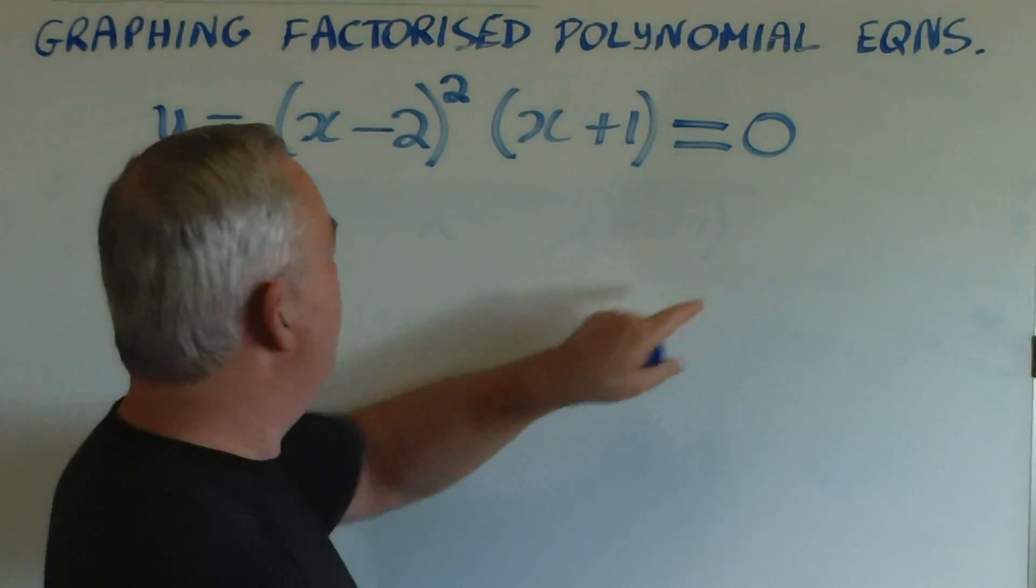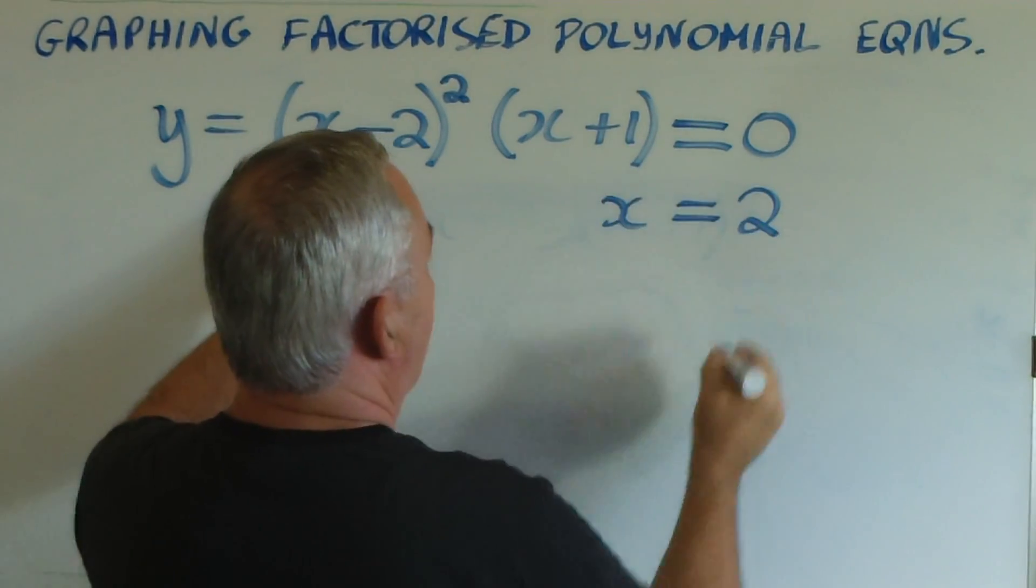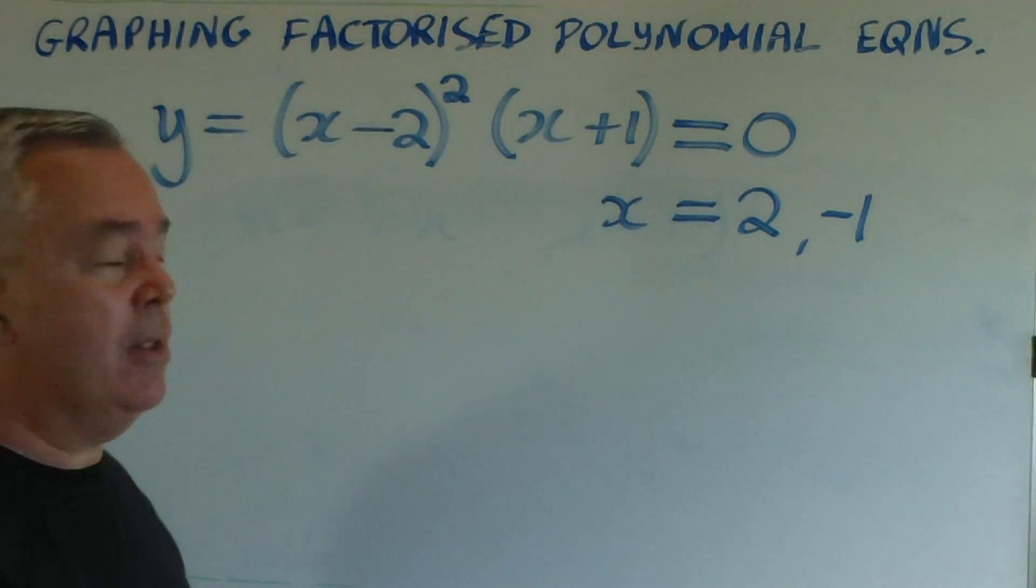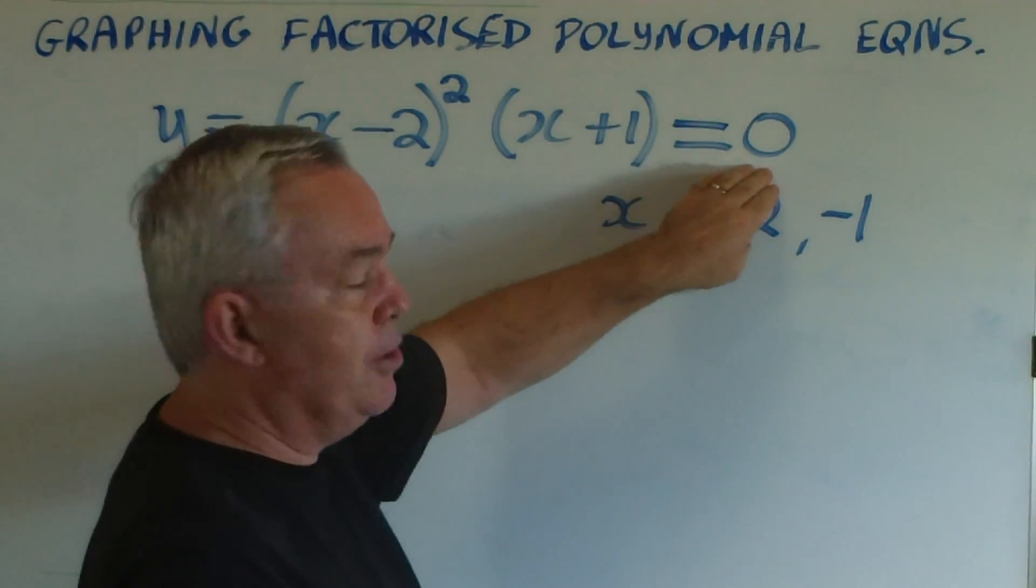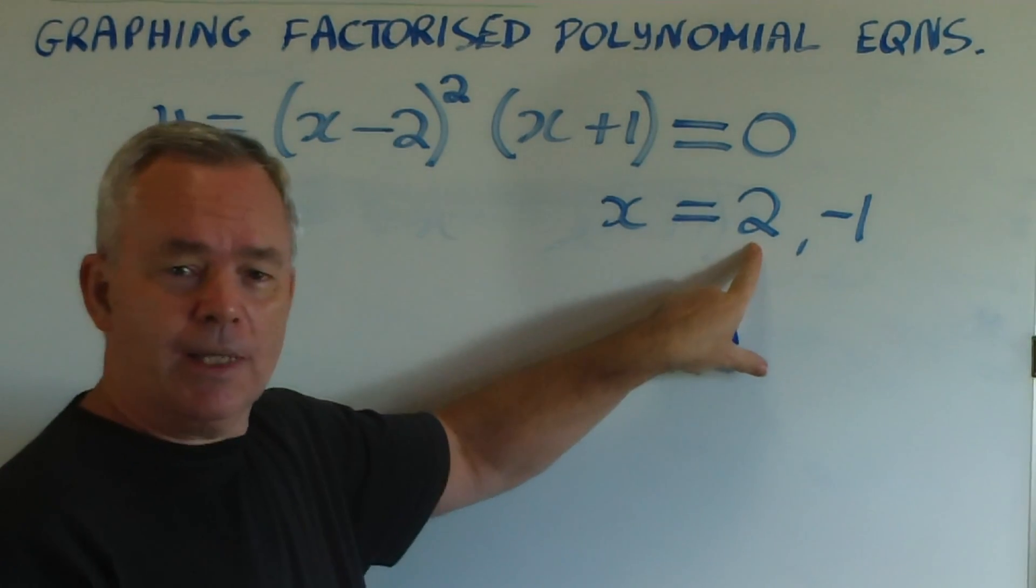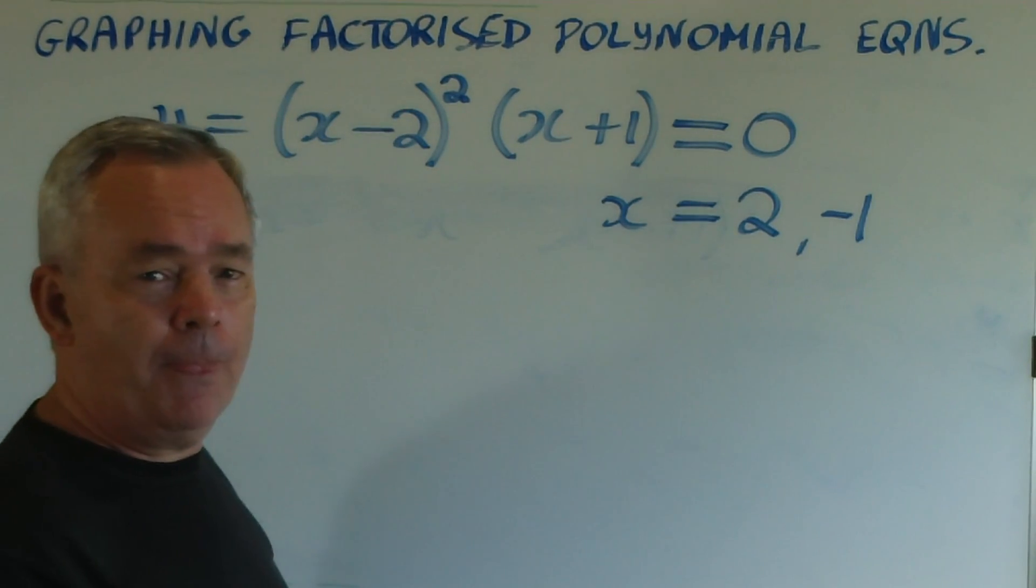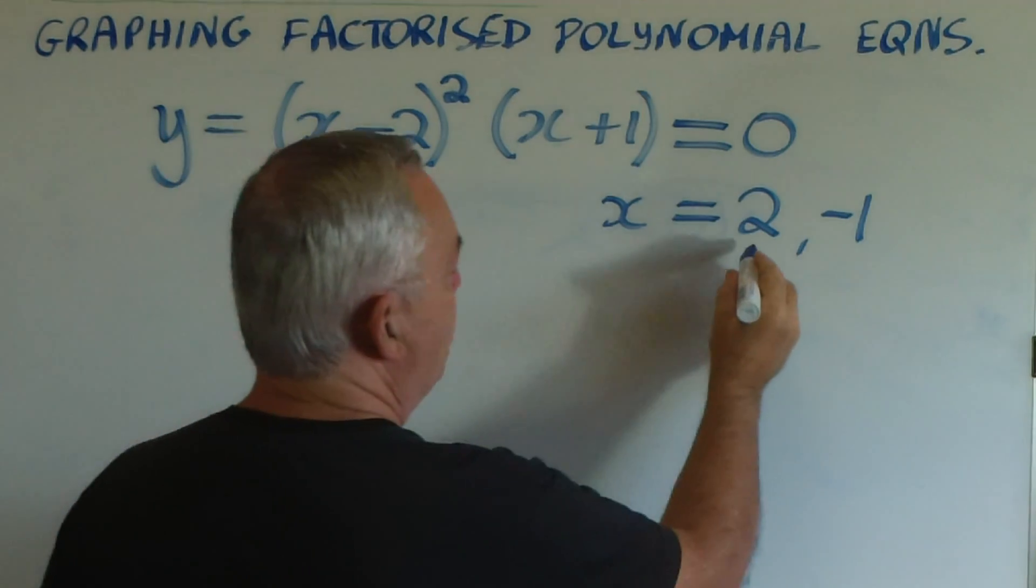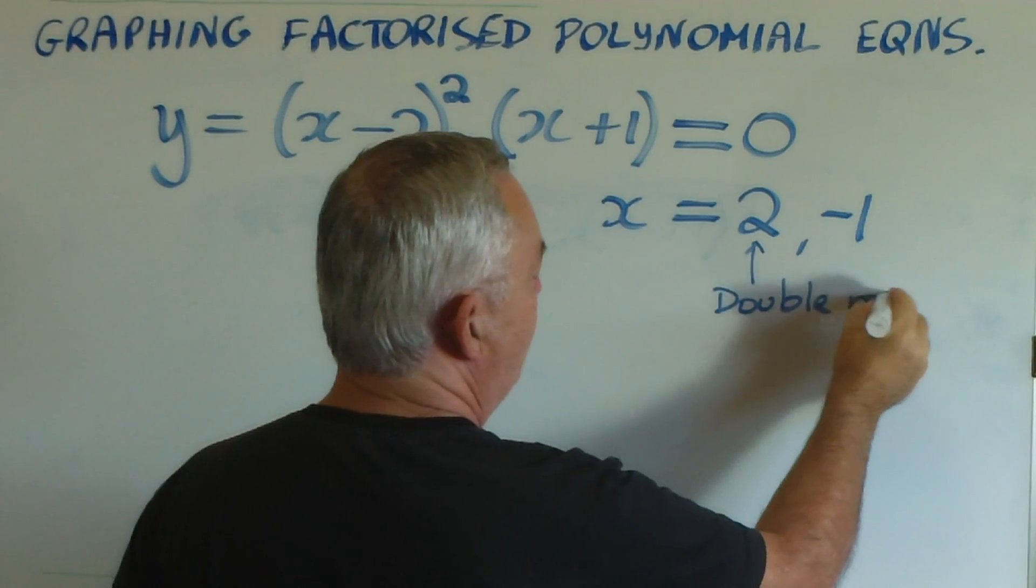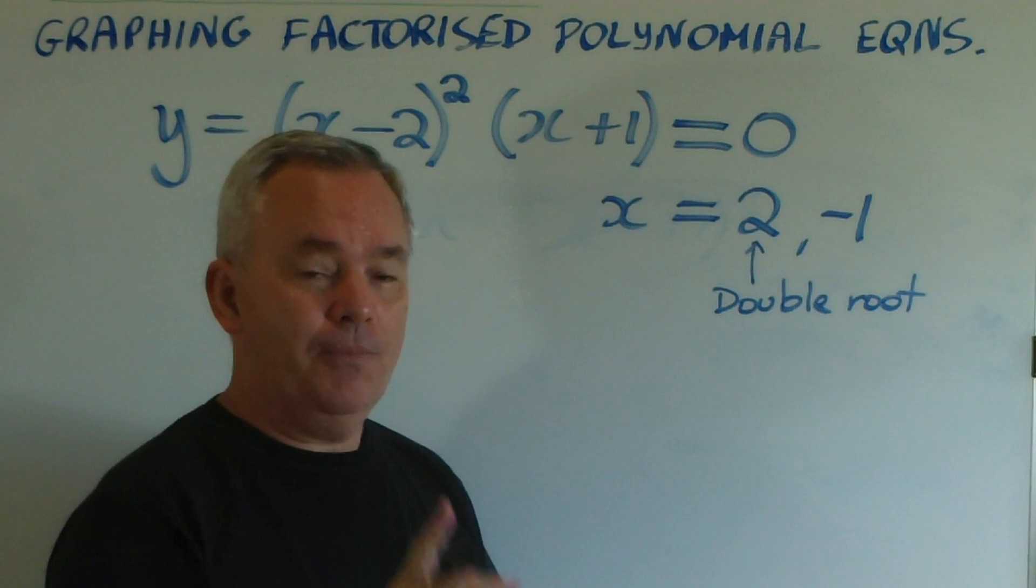When we set y equal to zero, we still only get a root at 2, and we get a root at minus 1. They're the only numbers that make this expression zero. Why the square? Well, this root occurs twice because this factor occurs twice. We call it a double root. And what effect does that have on the graph? Let me explain.